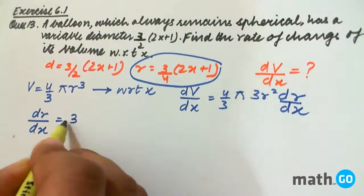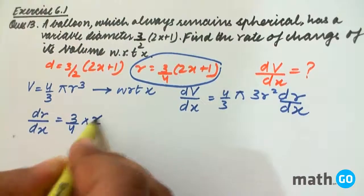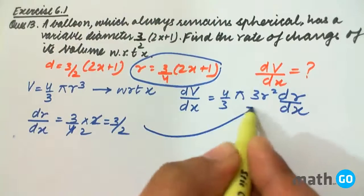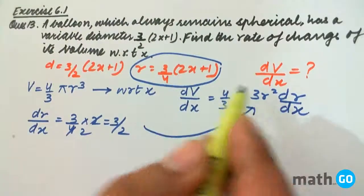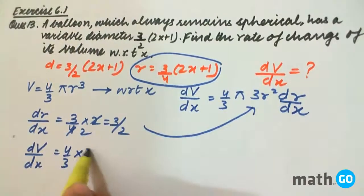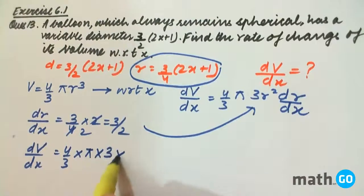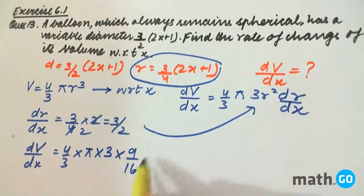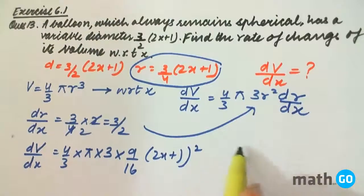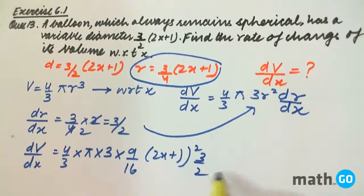We get dr/dx equals 3/4 into 2, which is simply 3/2. Now if we put this value in, we get dV/dx equals 4/3 into π into 3 into r², that is 9/16 into (2x+1)² into dr/dx that is 3/2.